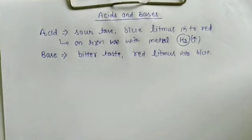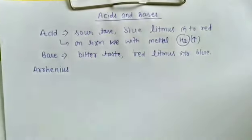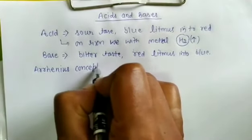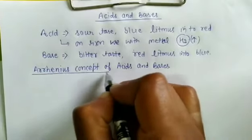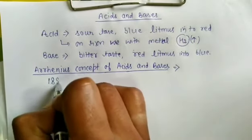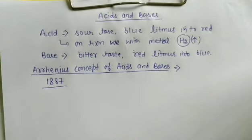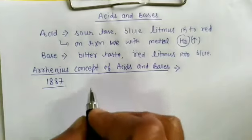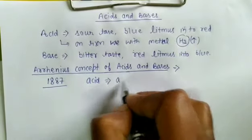Today we start with the very first concept regarding acids and bases, given by Arrhenius. Arrhenius was a scientist who put forward a concept known as the Arrhenius concept of acids and bases — this is the very first successful attempt to introduce and identify acids and bases. In 1887, Arrhenius said that an acid is a substance which has the ability to give H⁺ ions when dissolved in water.